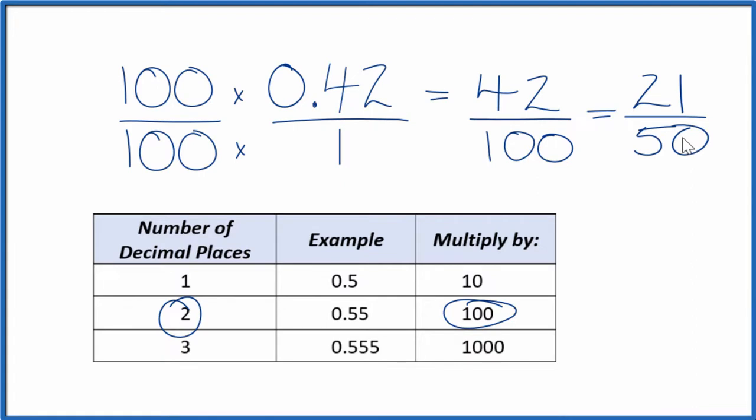And 21 over 50, we can't simplify that any further. So we've taken the decimal 0.42 and converted it to a fraction, 21 over 50.